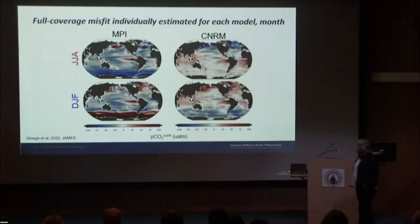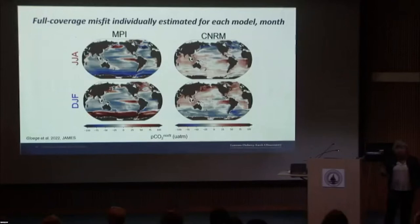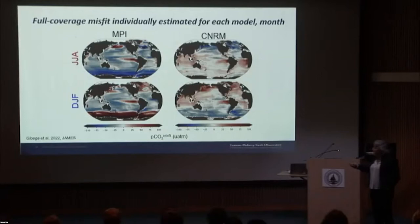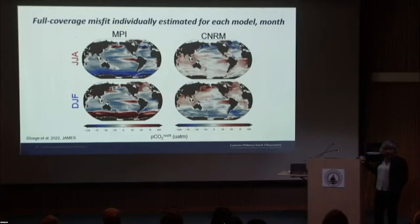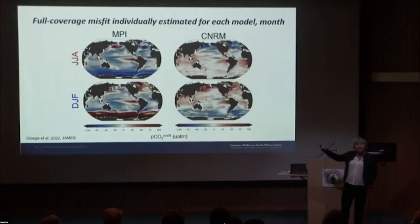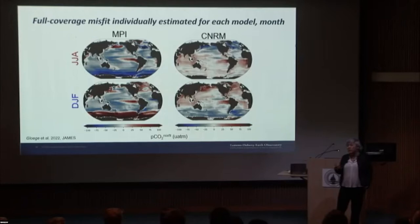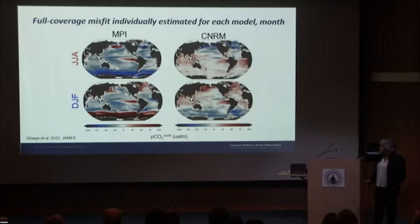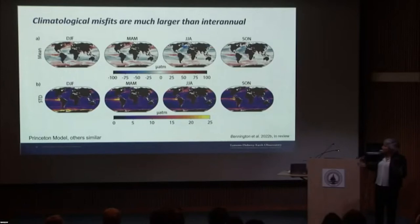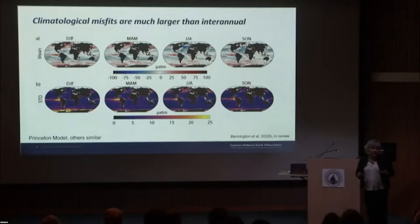Here are the full-coverage misfits — individual for each model and each month. For example, in JJA and DJF for the MPI and CNRM models: MPI needs huge corrections in the Southern Ocean, while CNRM needs the opposite signs and much smaller corrections there. Models have very different correction fields needed. These correction fields can actually be useful input to the model development process, giving a full-field understanding of how the model is diverging from SOCAT — not just one point. Importantly, the climatological misfits are much larger than the interannual misfits in all cases.